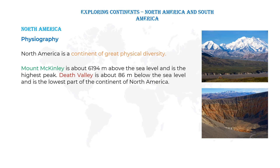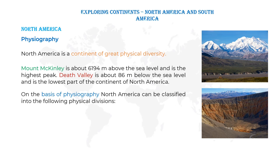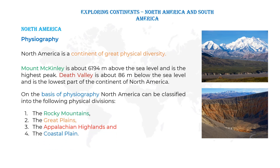On the basis of physiography, North America can be classified into the following physical divisions: the first one is the Rocky Mountains, the second one is the Great Plains, the third one is the Appalachian Highlands, and the fourth one is the Coastal Plains. Now we are going to learn about each of these different types of landforms.